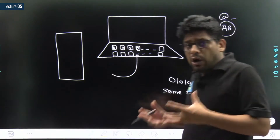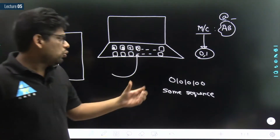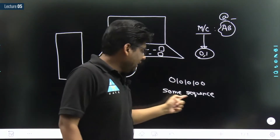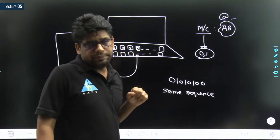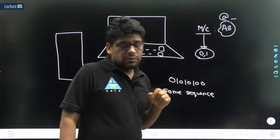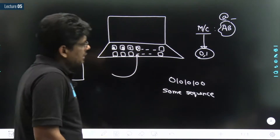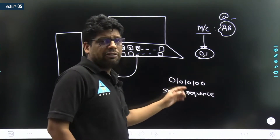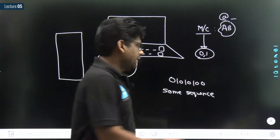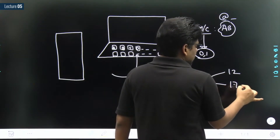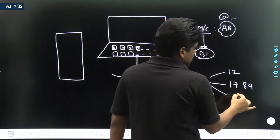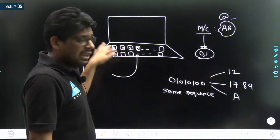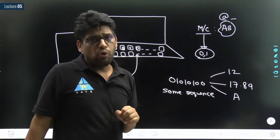Then how does the program understand how to handle this sequence of 0s and 1s? How to treat this sequence inside the program? The program needs to know whether to treat this sequence of 0s and 1s as a number like 12, or as a number with a floating point, or as a symbol.